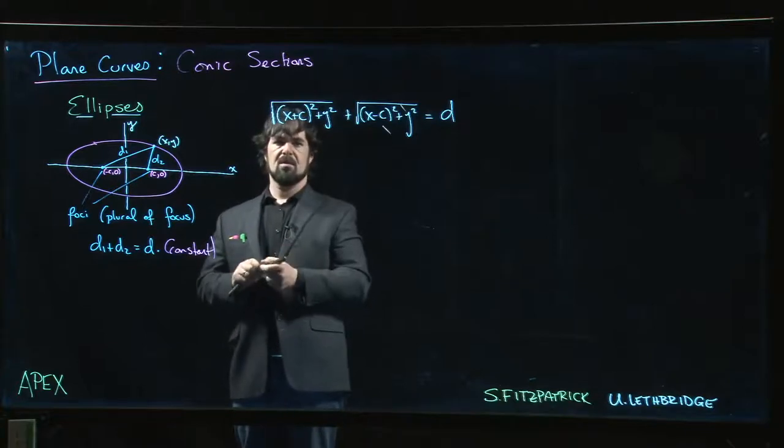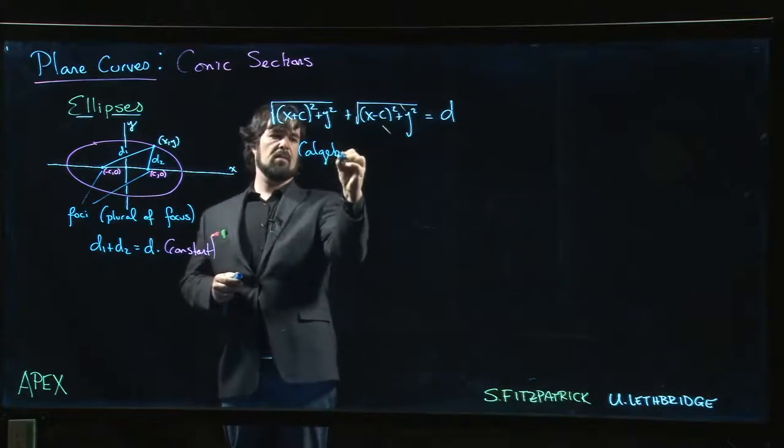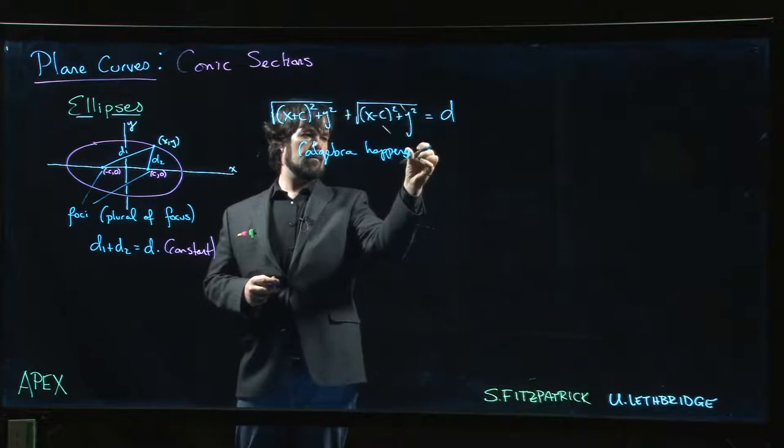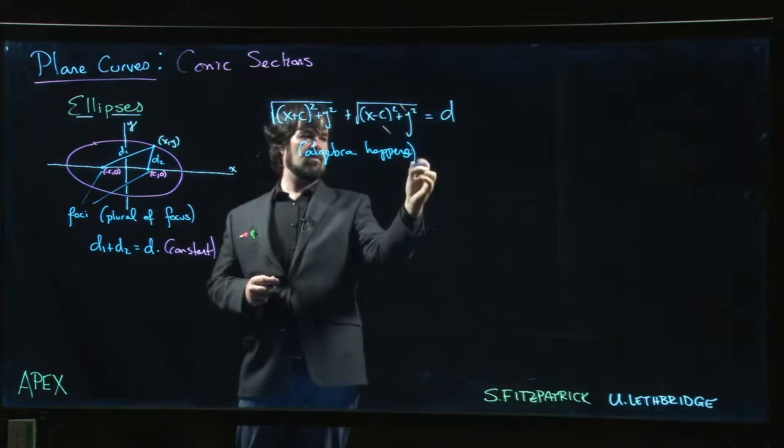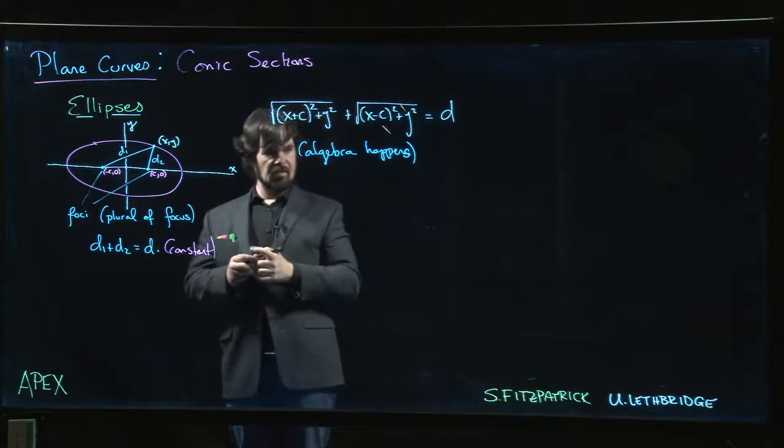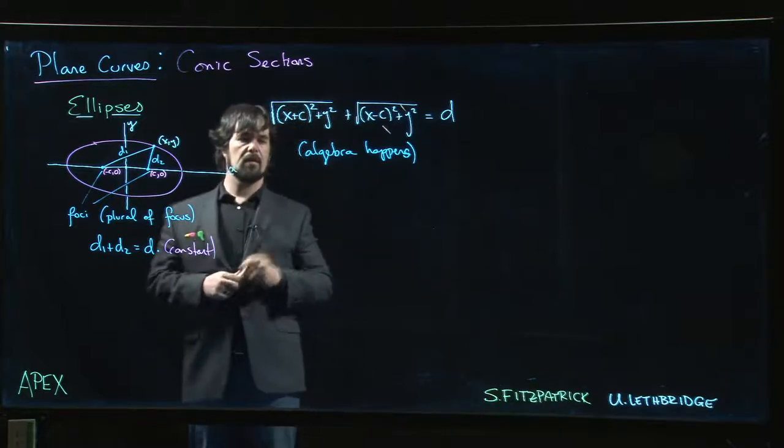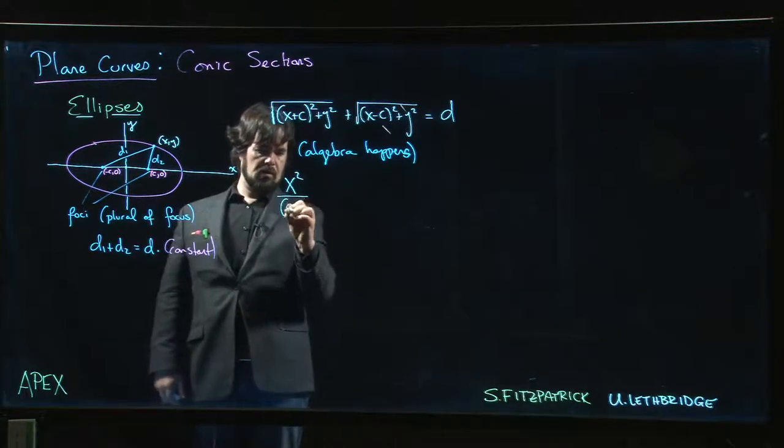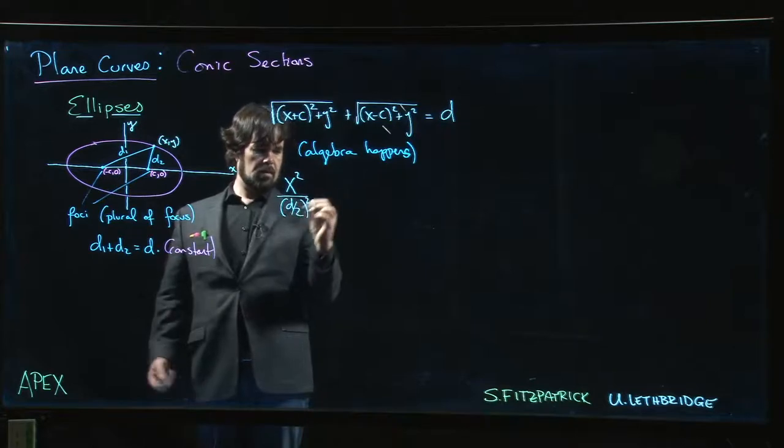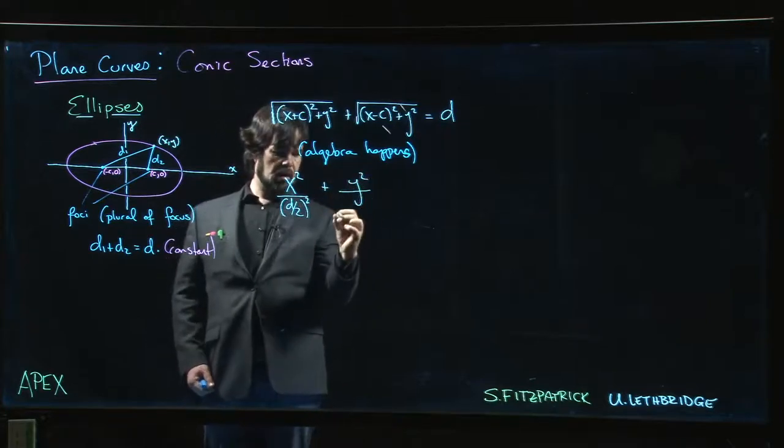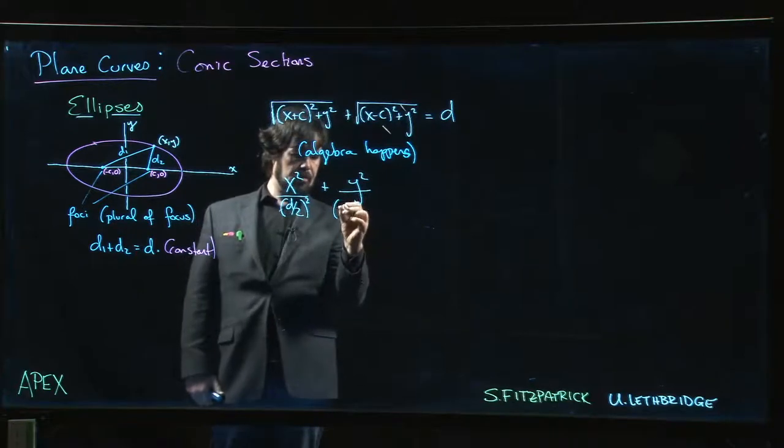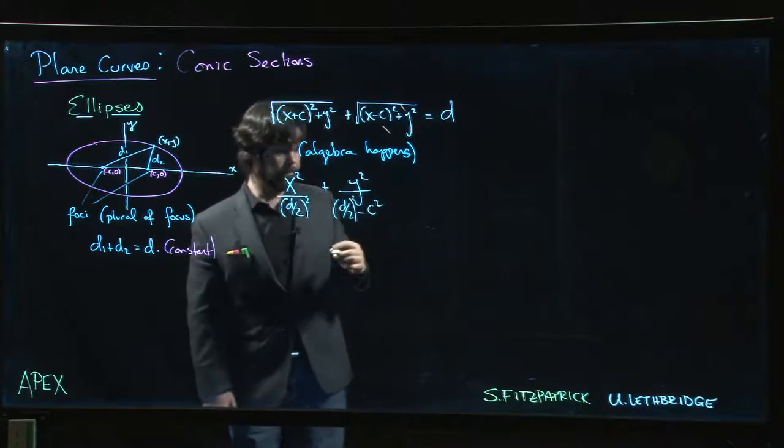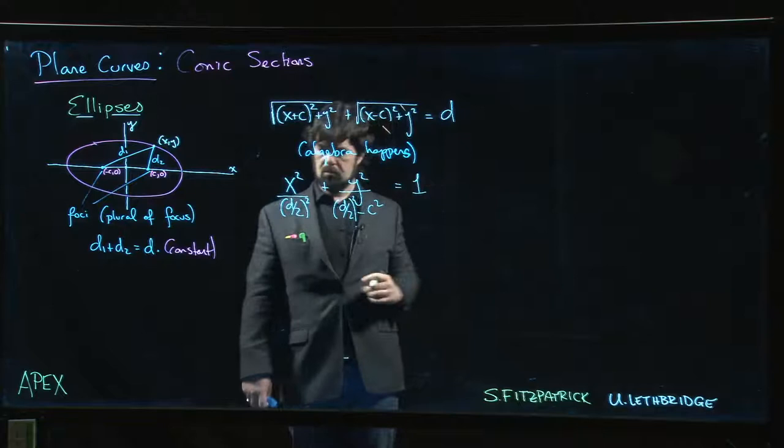So let's just say there's some algebra that happens. Algebra happens, and 10 minutes later, we get to here. x² divided by (d/2)² plus y² divided by (d/2)² - c² equals 1.